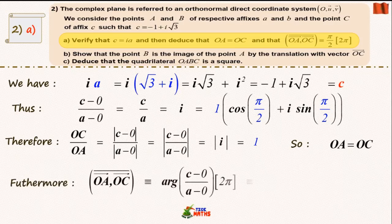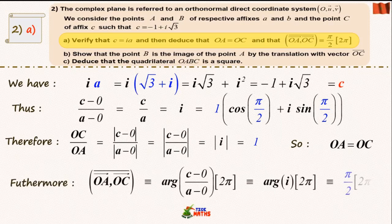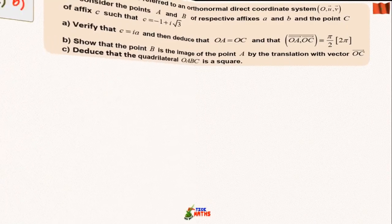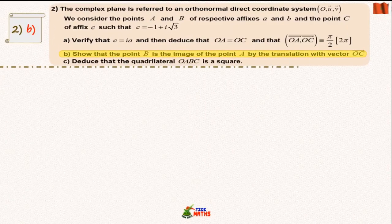Measurements of the oriented angle OA, OC are linked to the argument of the complex number (c - 0) over (a - 0). That's why angle OA, OC is congruent to π over 2 modulo 2π.